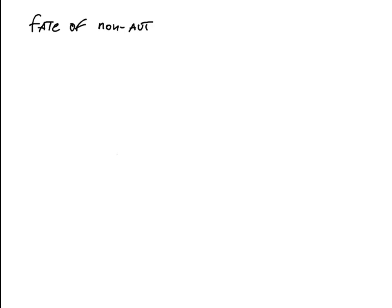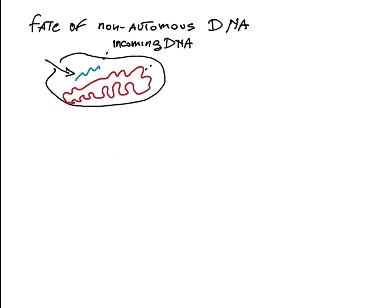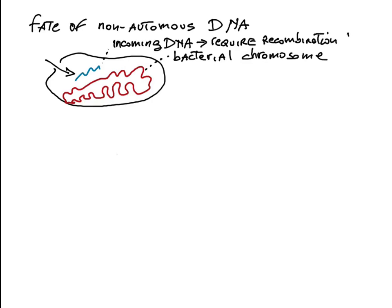Fate of non-autonomously replicating DNA. When DNA that enters a new cell does not have an origin of replication, its only avenue for maintenance in the recipient cell is recombination with the resident chromosome, which has an origin of replication.